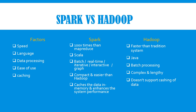In terms of ease of use, Hadoop is complex and lengthy, using Java which is not very user-friendly compared to Spark. Spark is more compact and easier than Hadoop. Another important difference is caching: Hadoop doesn't support caching of data, but Spark caches data in memory and enhances system performance. Those are the basic and major differences between Spark and Hadoop.